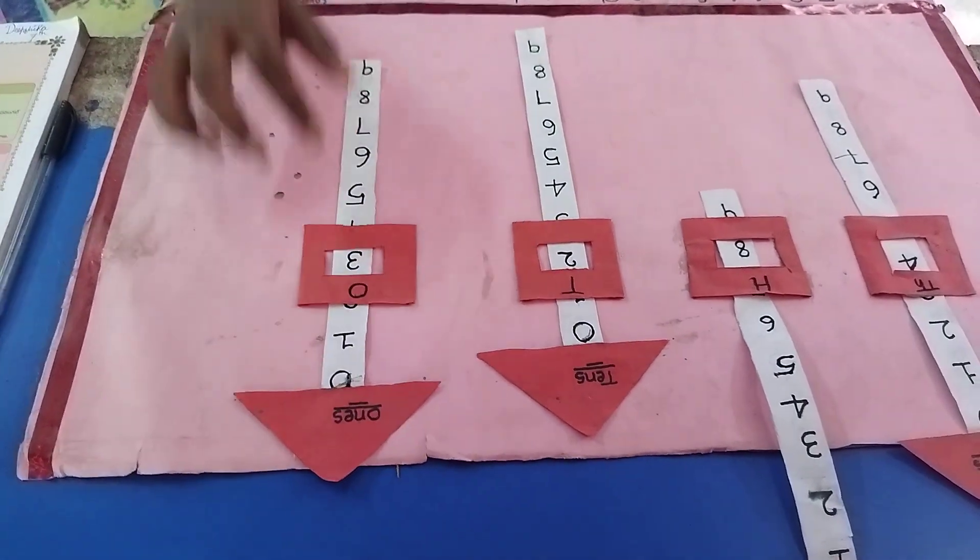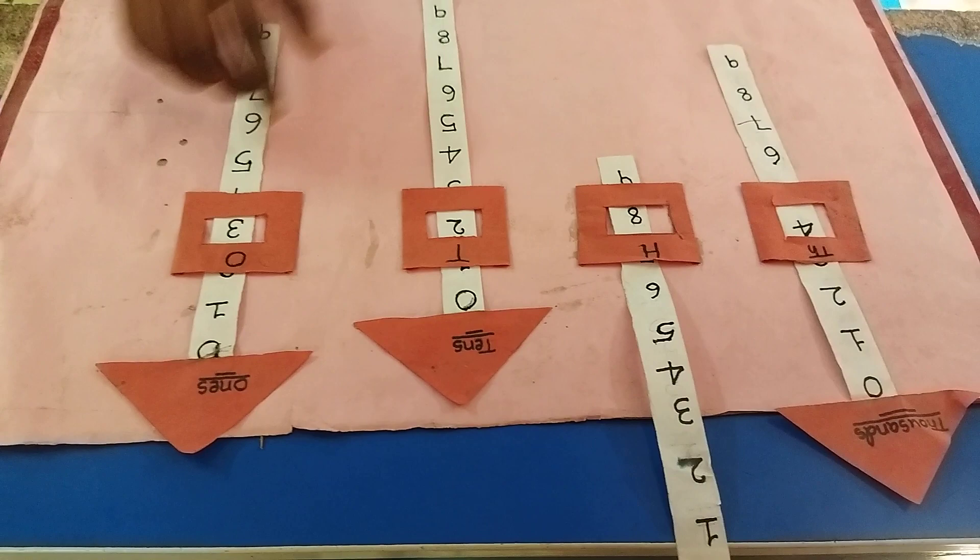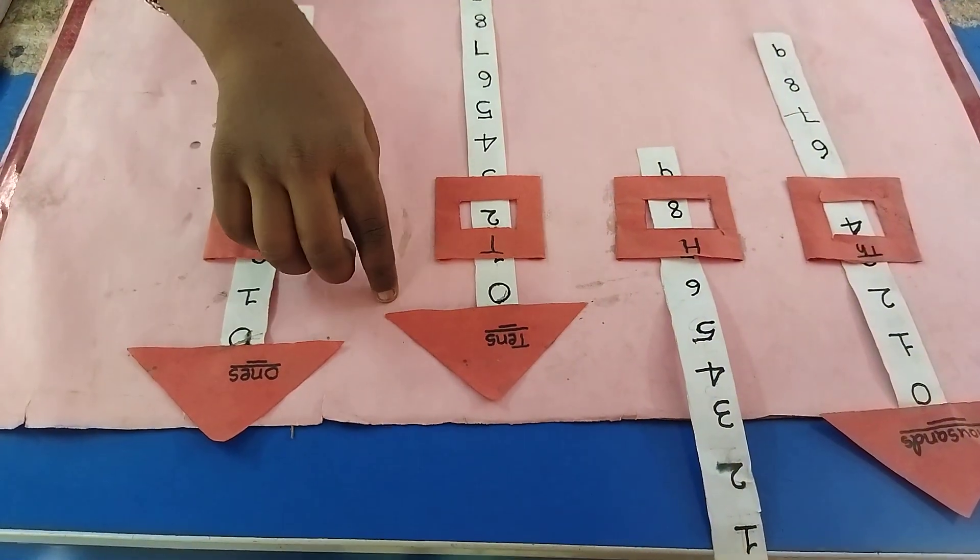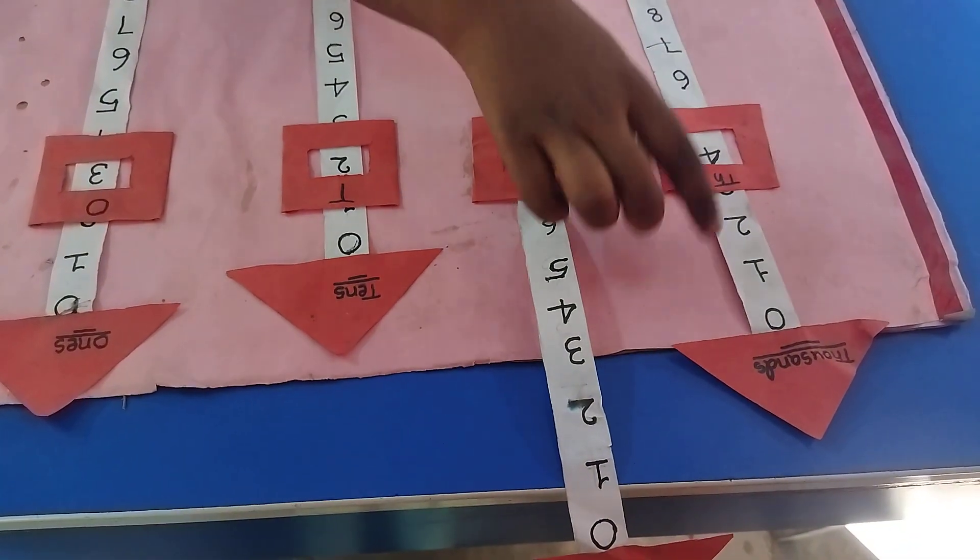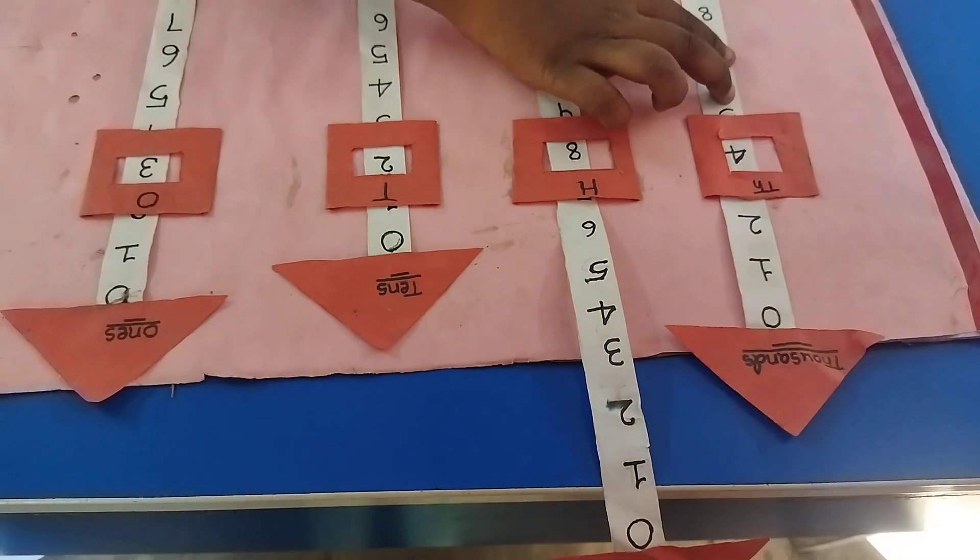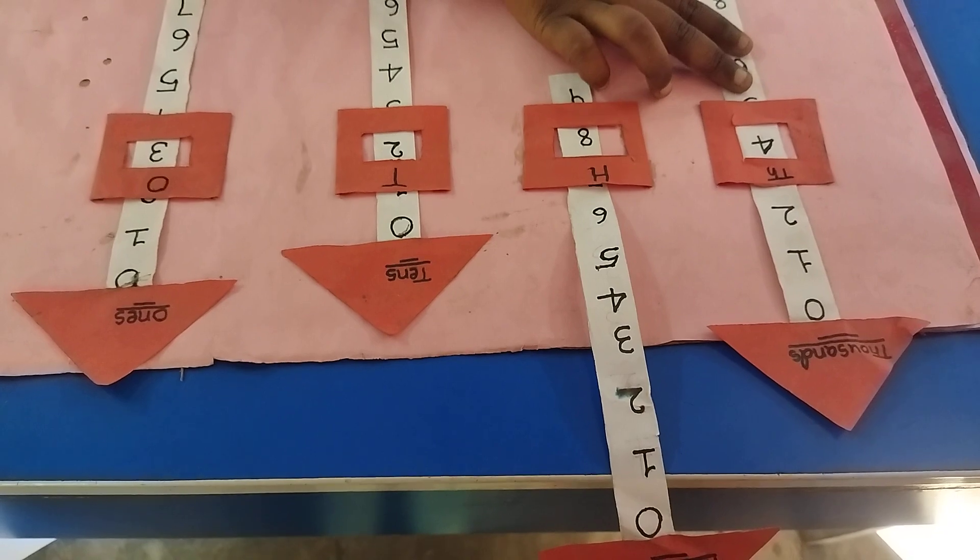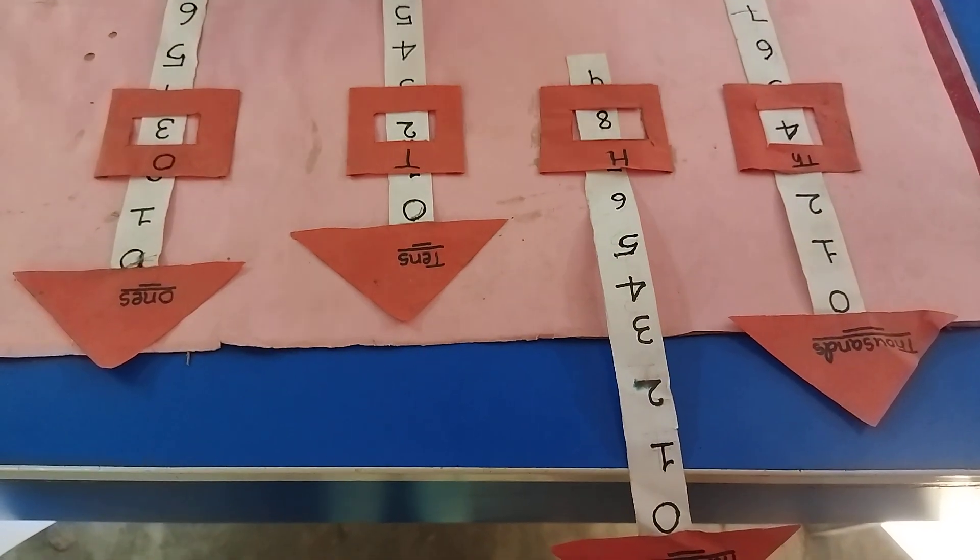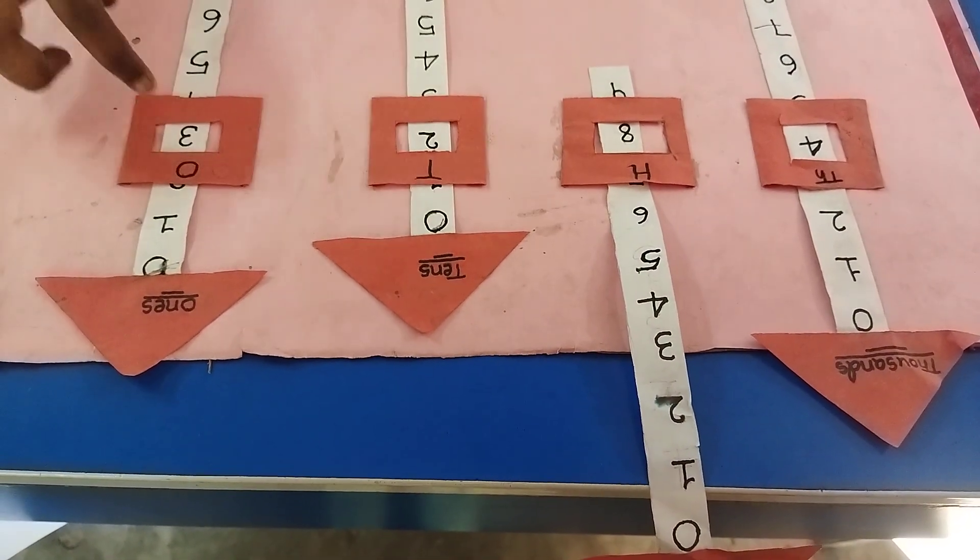Place values. 3 ones, 2 tens, 8 hundreds, 4 thousands. Yes. Can you guys score that? 4,000. Yes.